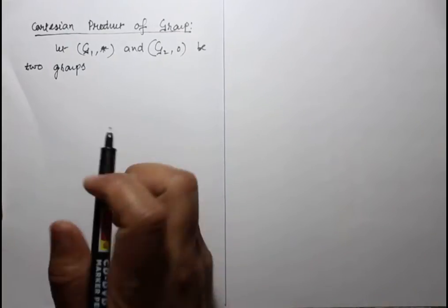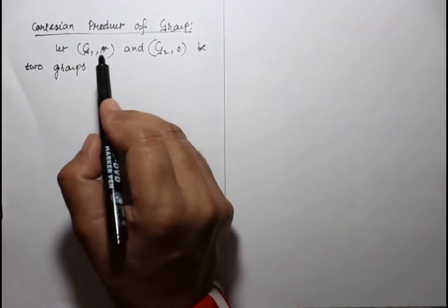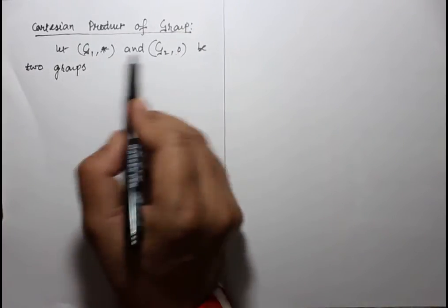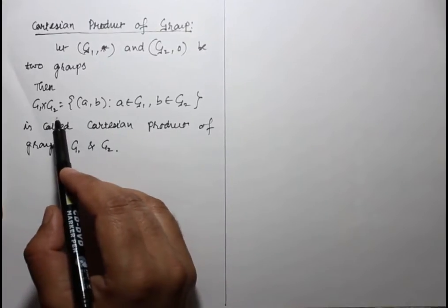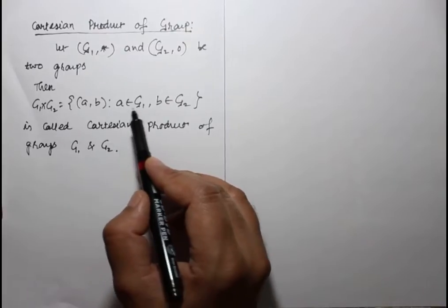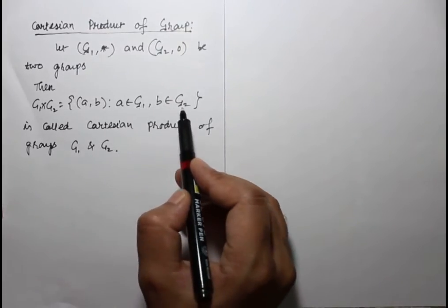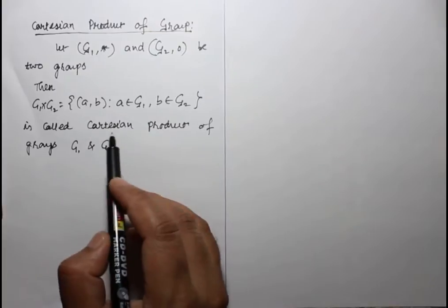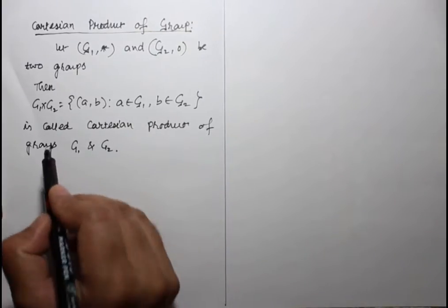Cartesian product of groups. Let G1 and G2 be groups with respect to a binary operation. Then G1 cross G2 equals the set of ordered pairs (A, B) such that A belongs to G1 and B belongs to G2. This is called the Cartesian product of groups G1 and G2.